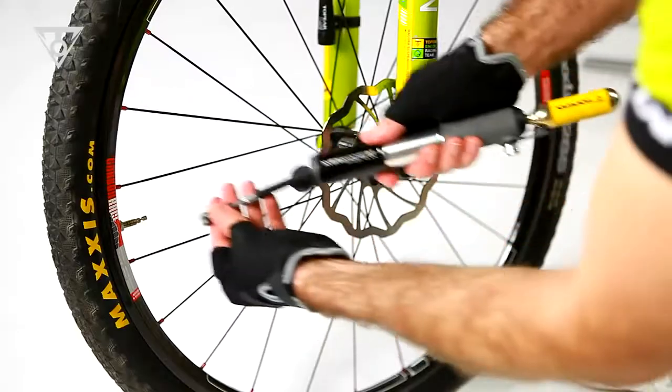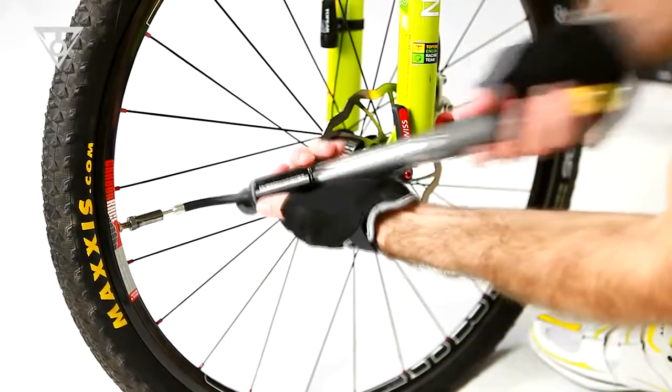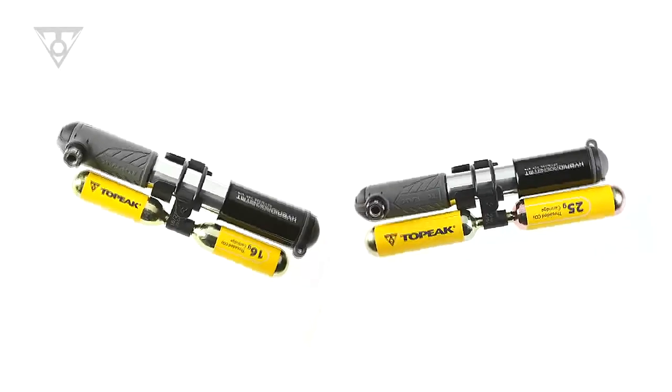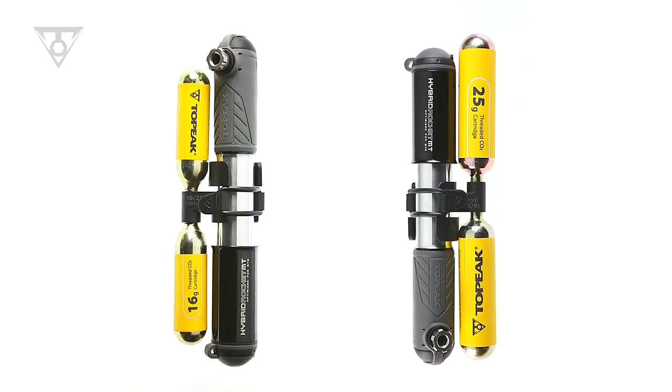The extendable hose takes stress off the valve while pumping and makes it easy to continue filling your tire to the desired pressure. The Hybrid Rocket MT is recommended for mountain bike tires with pressures up to 90 psi or 6 bar.